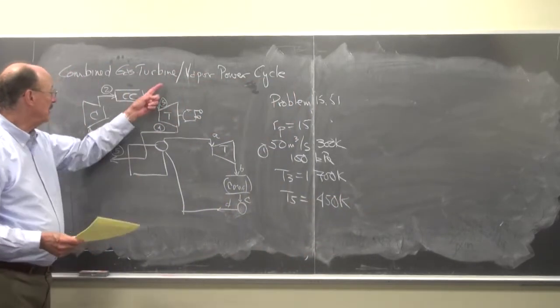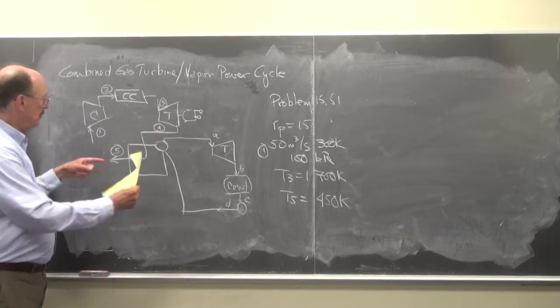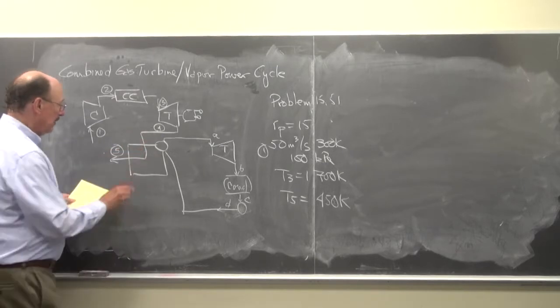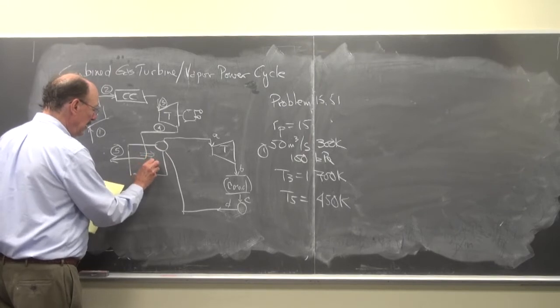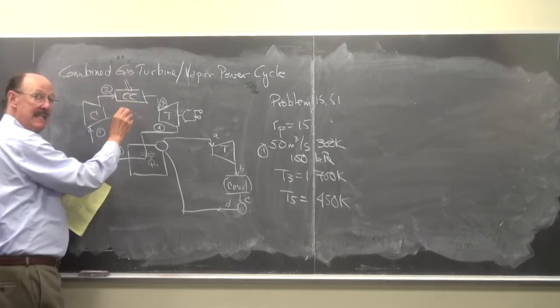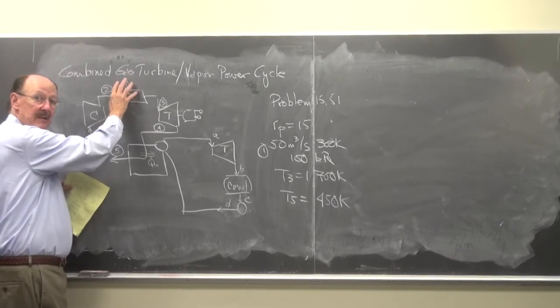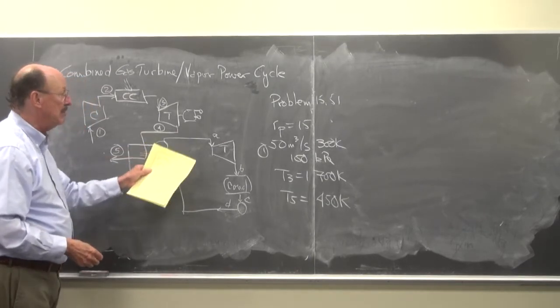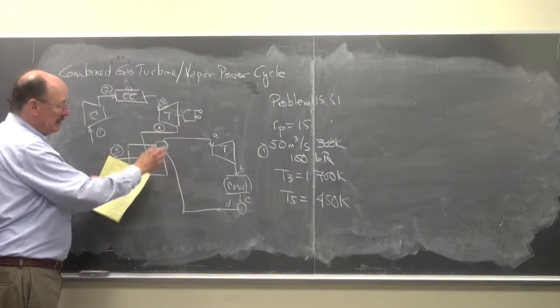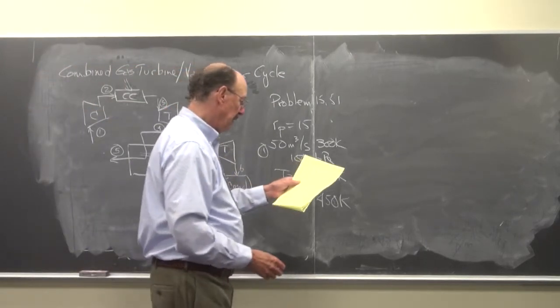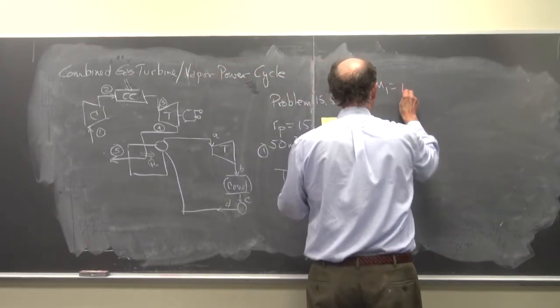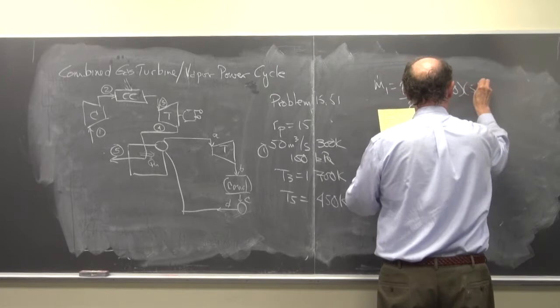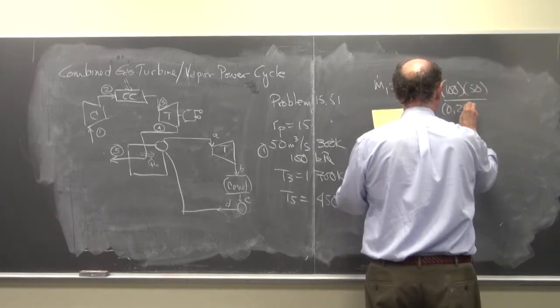So we're given this information. If I calculate T4, I can figure out what the energy is that's being provided here. So this would be the Q dot in to the steam generator. But the only heat in to the system is here in the combustion chamber. So now we'll go through and find the various state points that we need for the gas turbine cycle, then we'll do it for the steam turbine cycle.